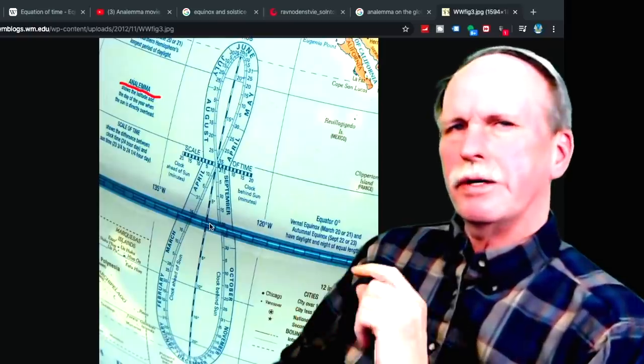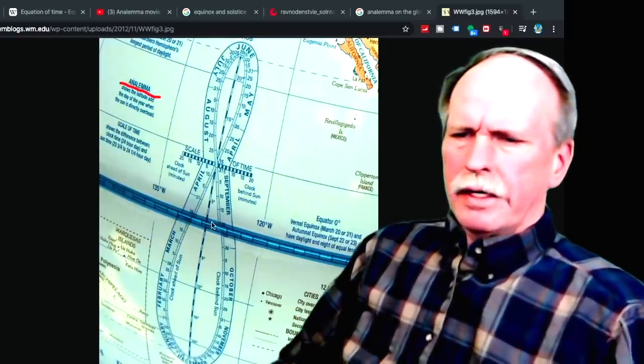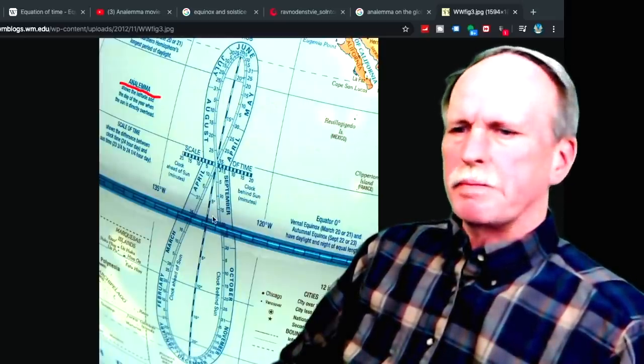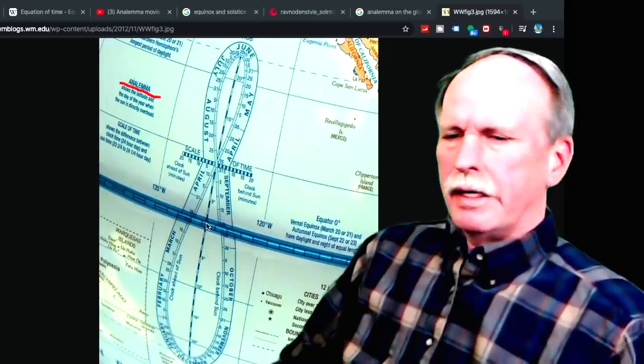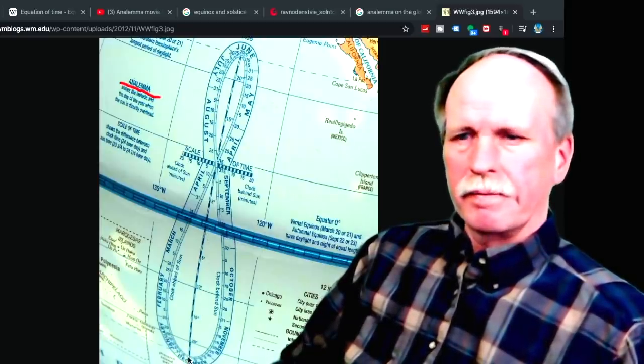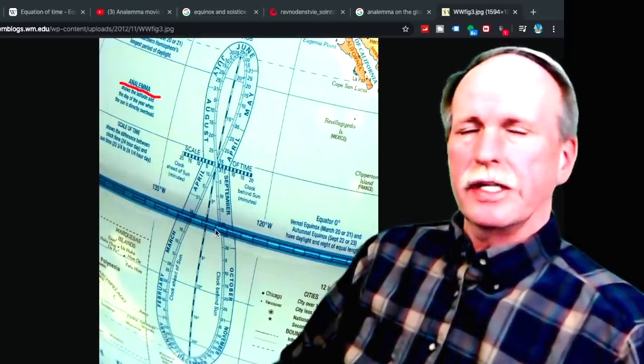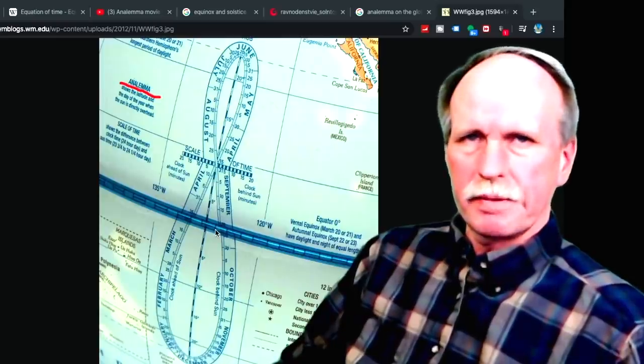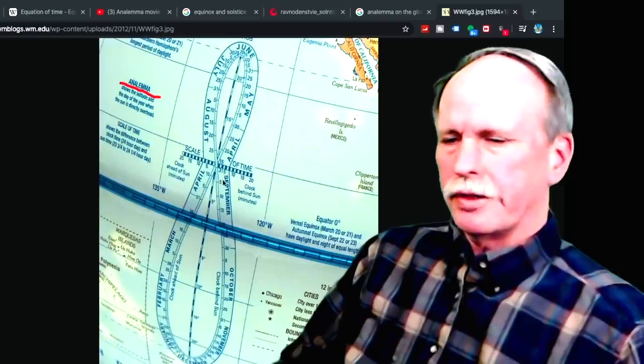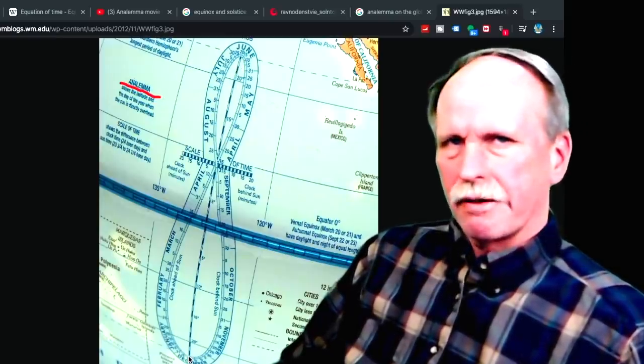But the earth does have an axial tilt, and as a result the sun travels north to the Tropic of Cancer in June, comes back down to the equator, and then travels south to the Tropic of Capricorn in December. The two times that it is over the equator are called the equinox, and they occur in March and September. We have the June solstice when the sun is furthest north, and we have the December solstice when the sun is the farthest south.